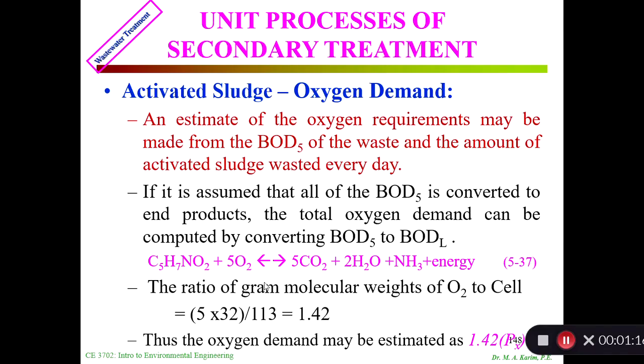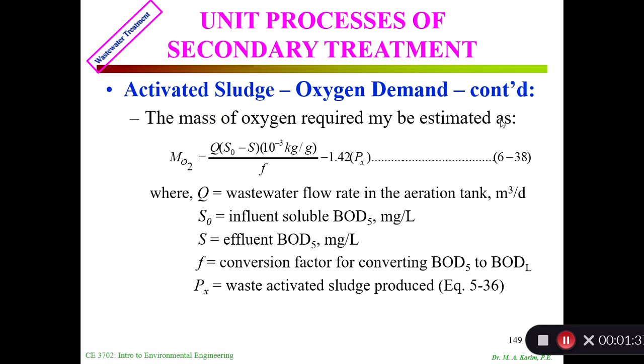The oxygen demand may be estimated by 1.42 times Px. Px is the wasted amount. Conversion from BOD5 to BOD ultimate is 1.42. The mass of oxygen required may be estimated as Q times (S0 minus S) times 10^-3 kg per gram divided by f minus 1.42Px. Q is the wastewater flow, S0 is the influent soluble BOD, S is the effluent BOD5.